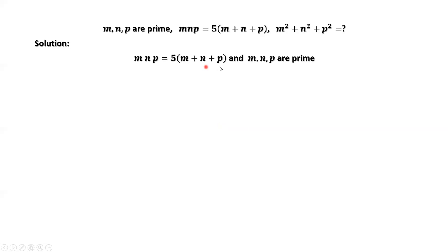Here are two given conditions. From the first condition, m times n times p equals 5 times m plus n plus p. 5 is the factor of the product m times n times p. Therefore, one of m, n, or p is 5.